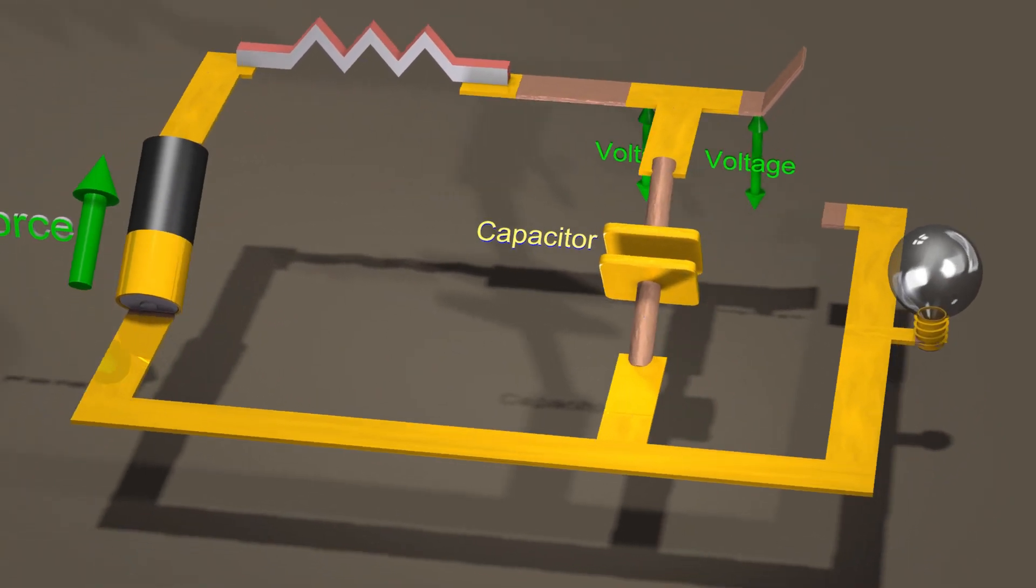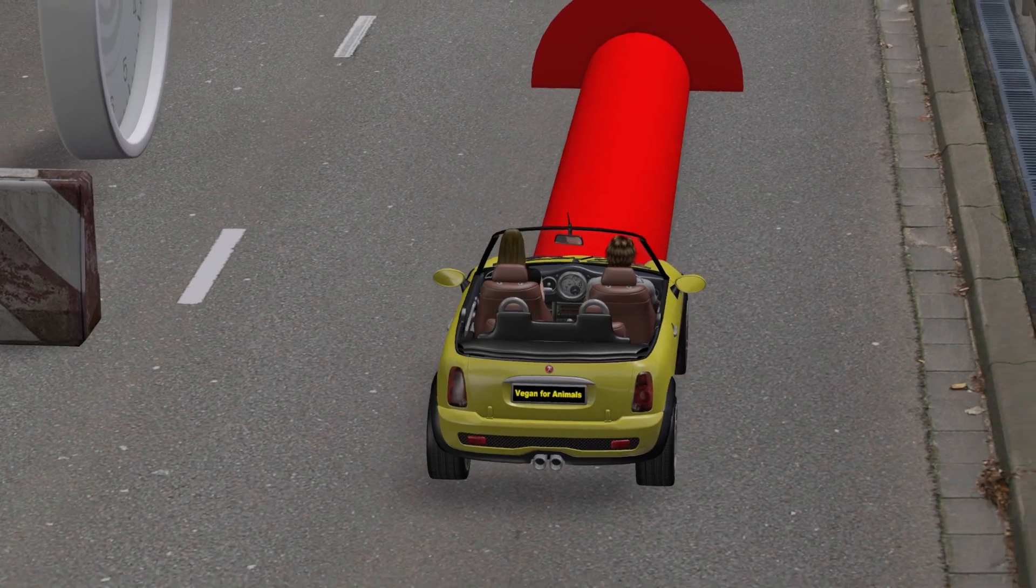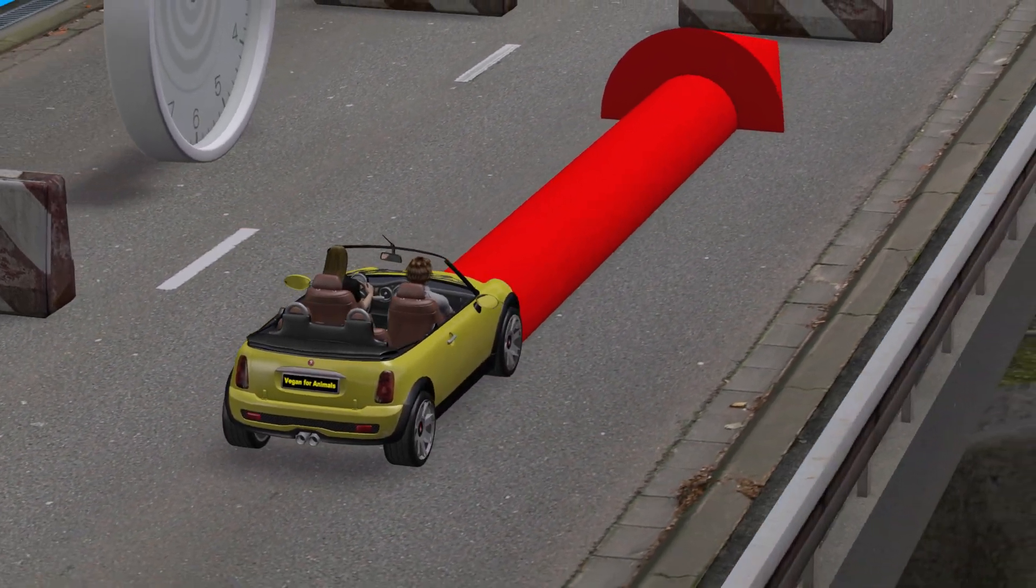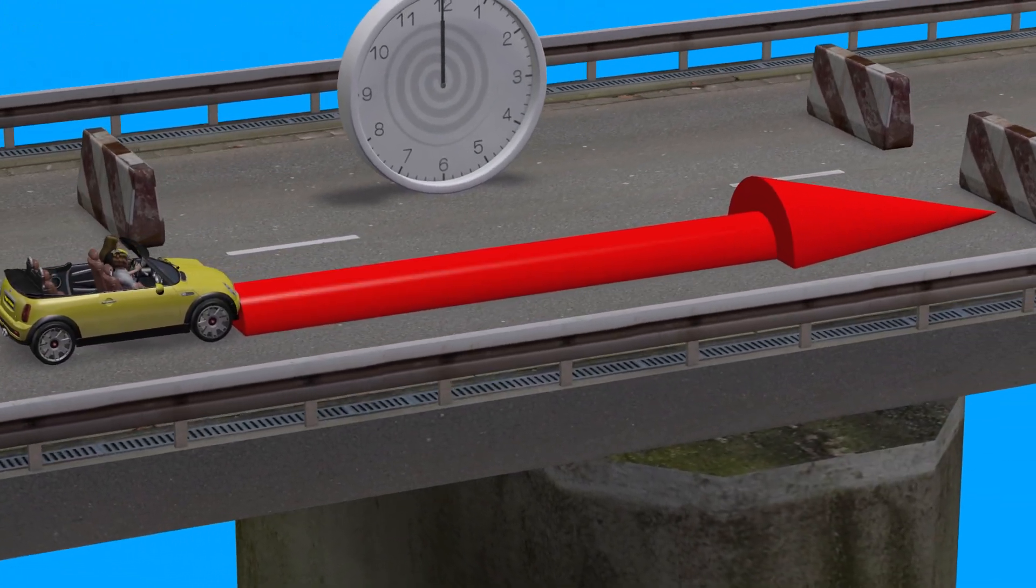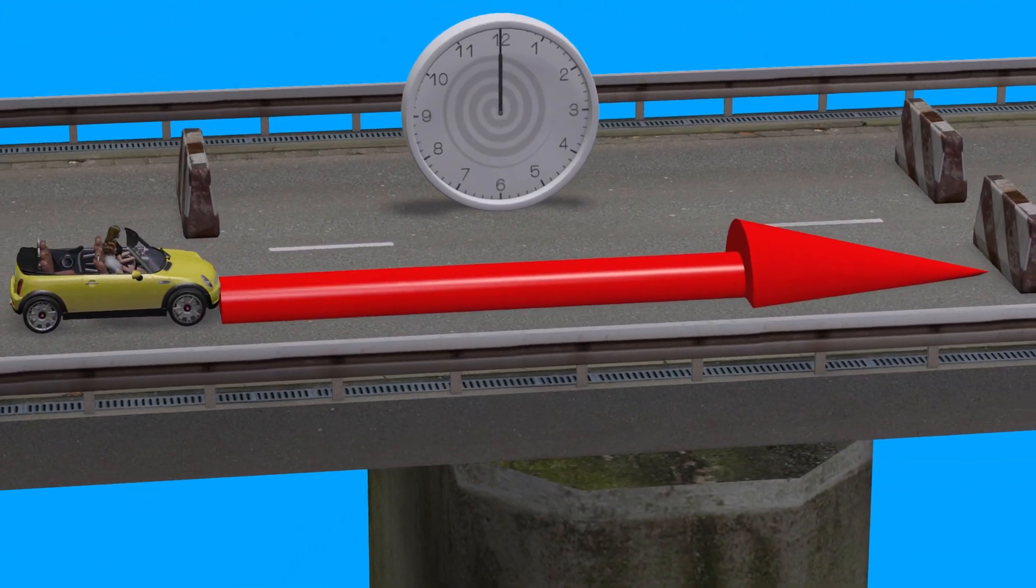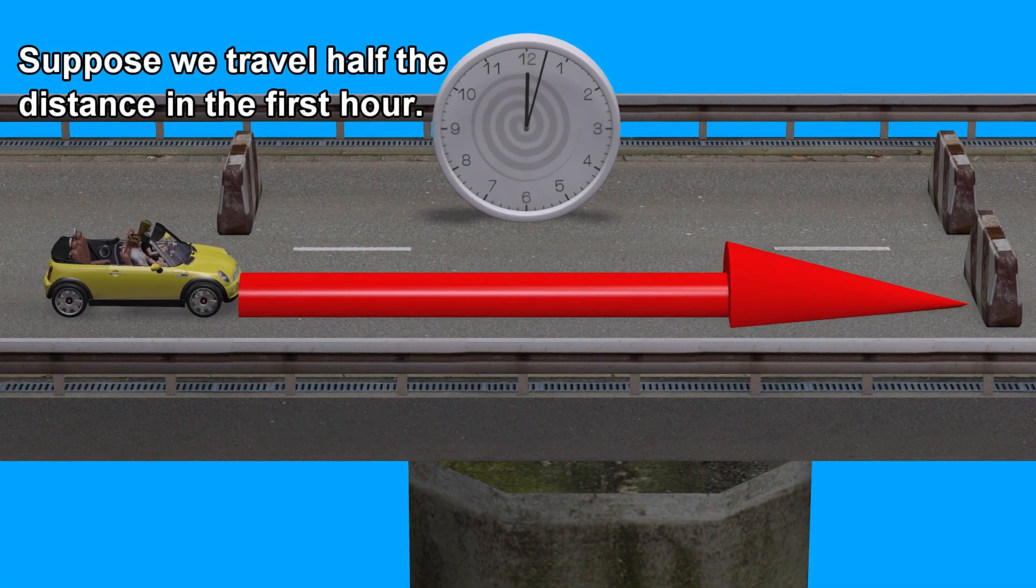To understand exponential decay, consider this red arrow, which represents the distance to our destination. Suppose we travel half the distance in the first hour.